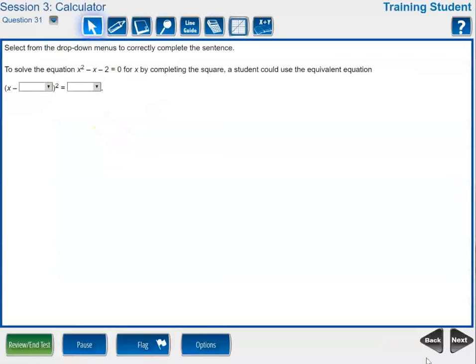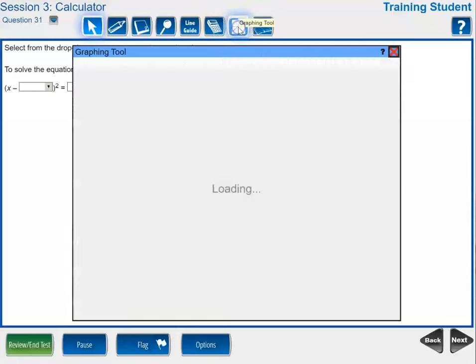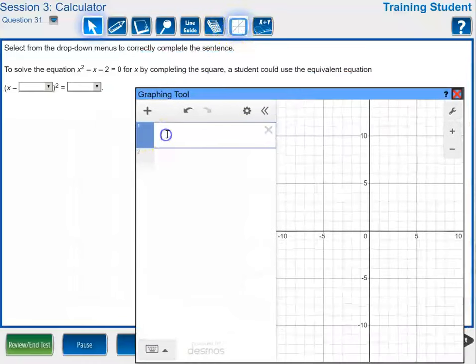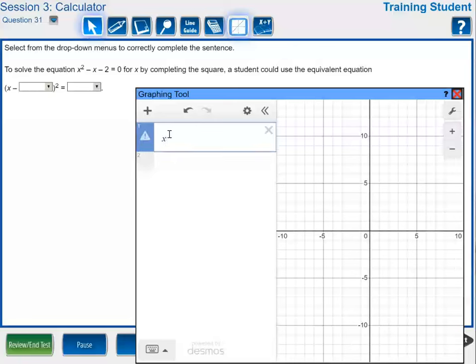The first item we're going to look at today is question number 31 and this is a quadratic equation and we're solving it or actually writing it in an equivalent form by completing the square. To do this problem with the Desmos calculator, the students would first click on this button that says graphing tool to bring up their Desmos calculator. You can type the equation into the first row x squared, squared is shift 6 and then type your 2, minus x minus 2 equals 0.